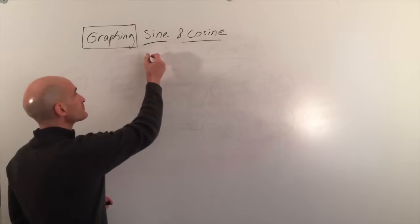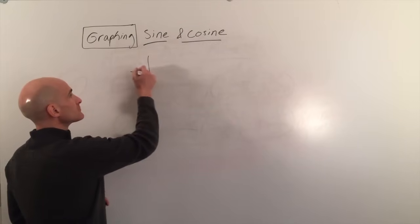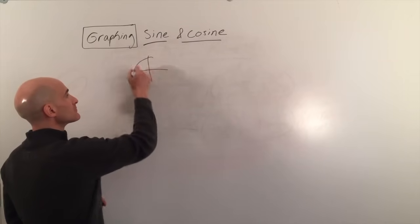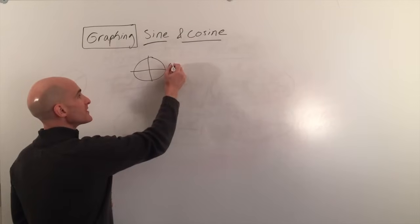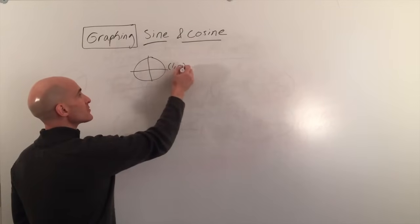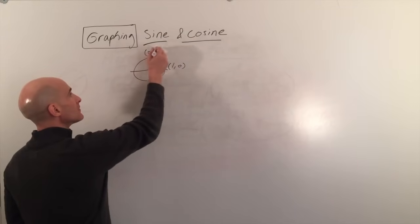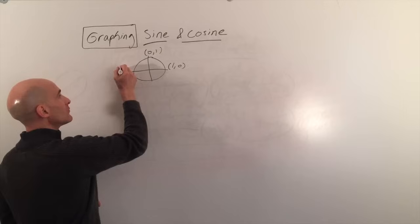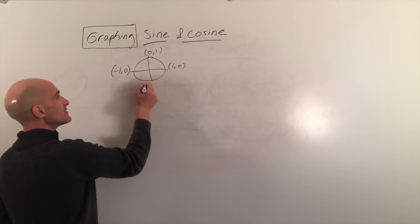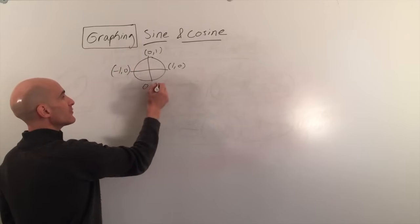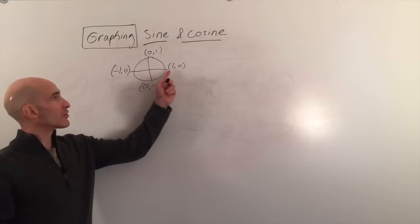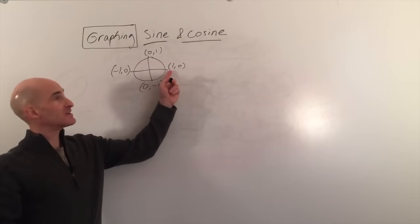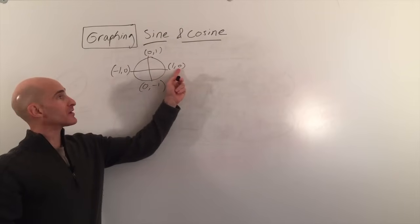Let's take a look at the unit circle. If you look at these four points — (1, 0), (0, 1), (-1, 0), and (0, -1) — remember, in the unit circle, the cosine is the x-coordinate and the sine is the y-coordinate.